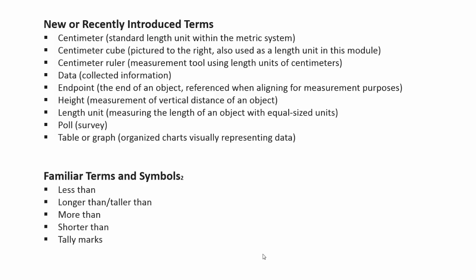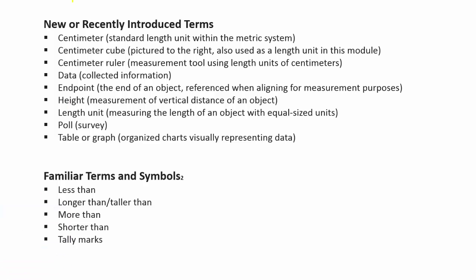There is some new vocabulary for students. In kindergarten they definitely do comparing — less than, bigger than, taller than, longer than — but in first grade you're really going to expand that. Some important vocabulary to focus on includes the idea of an endpoint, where the object starts and ends, and the idea of a length unit. We can measure in all sorts of units, but we want to work our way to a standard unit — a centimeter is a centimeter everywhere across the world.